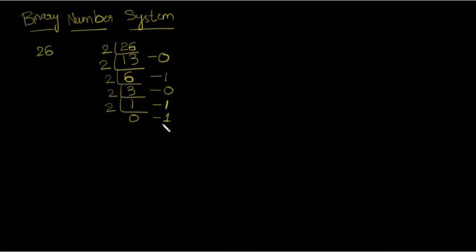2 goes 1 time, the remainder is 1. Now we divide with 0, remainder is 1. Now where do we get the binary number from this division? We have to go from bottom to top. That is 1, this 1, this 0, this 1, this 0. Now how do we check whether this number is 26 or not?